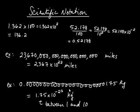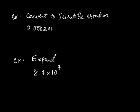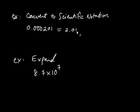Let's gain a little practice converting back and forth between decimal form and scientific notation. If you want to convert 0.000201 to scientific notation, first insert the decimal to create a number between 1 and 10 — that's 2.01. Then which way does this decimal have to move? The decimal was here and would move 1, 2, 3, 4 places to the left. So it's 2.01 times 10 to the negative 4.